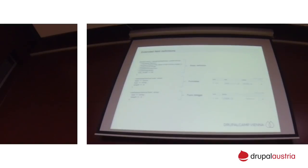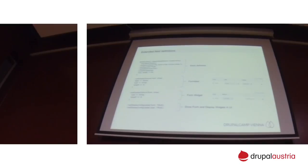What's useful to know is that there are additional methods about whether the user is able to see and change your configuration. So maybe it doesn't make sense that the user might change the configuration for the name field because you want it to be exactly like this — then you don't make it configurable. And if you make it configurable, then it shows up in the manage form and manage display user interfaces just like any configurable field.